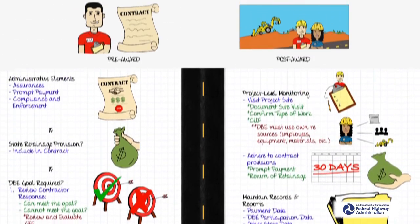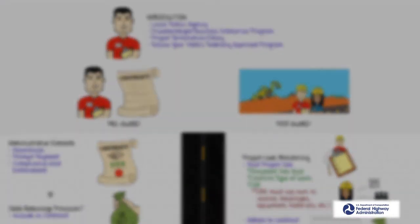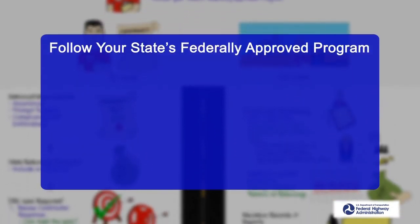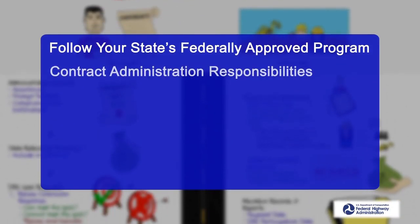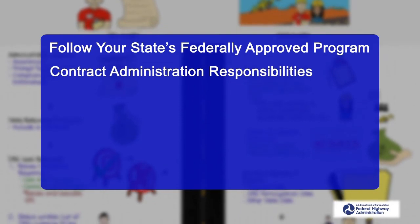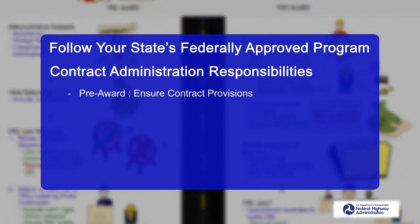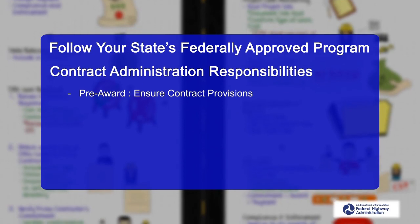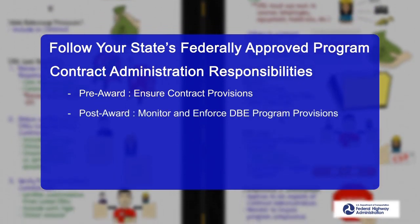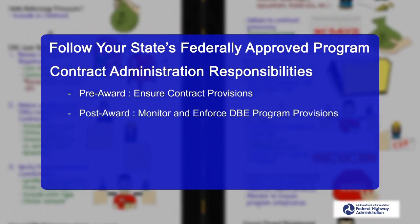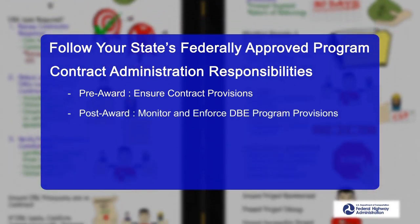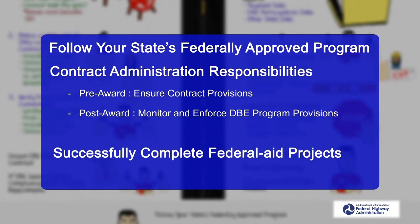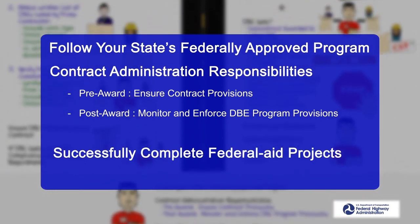Remember, these are your key responsibilities for the DBE program: follow your state's federally approved program. You have contract administration responsibilities in two phases — pre-award, ensuring your contracts include DBE program provisions, and post-award, monitoring and enforcing DBE program provisions. If you do these things, you will successfully complete your federal aid projects.